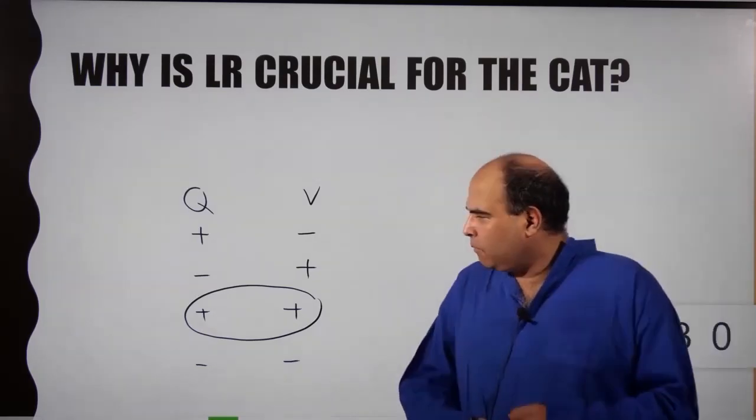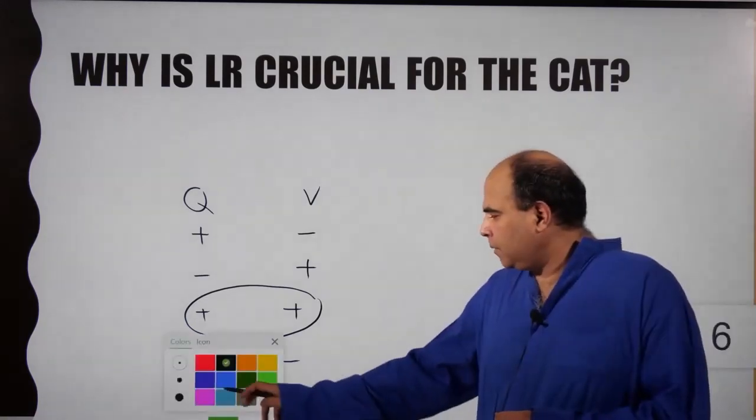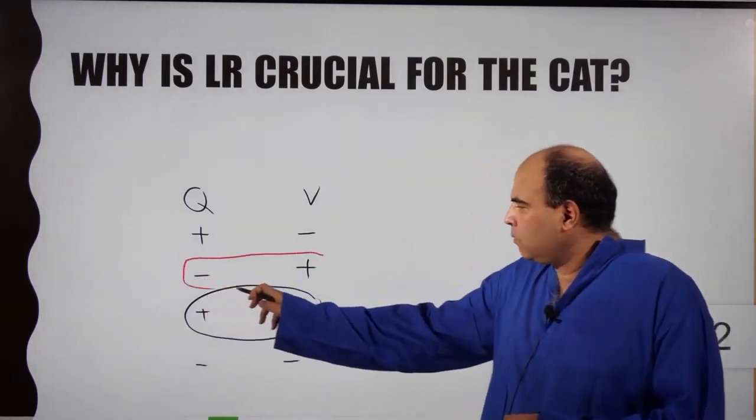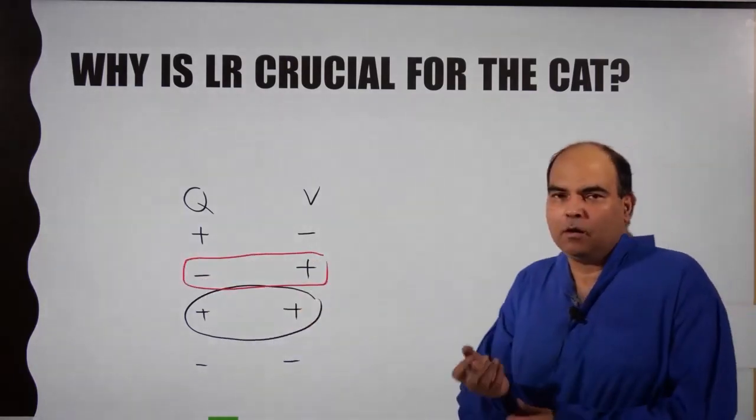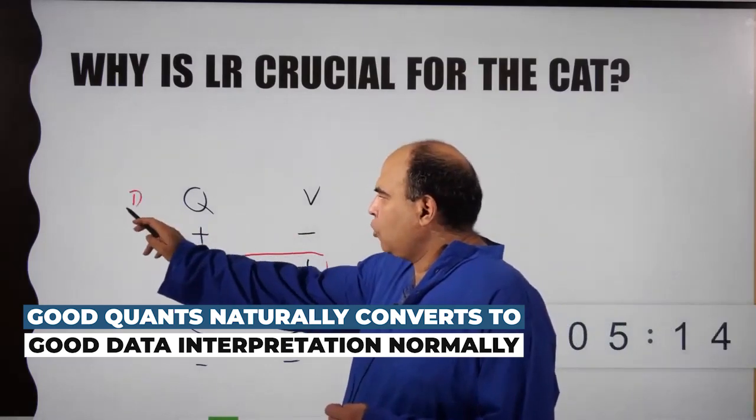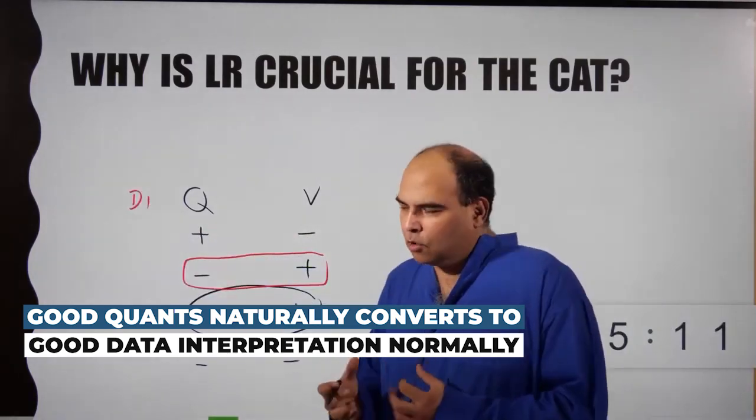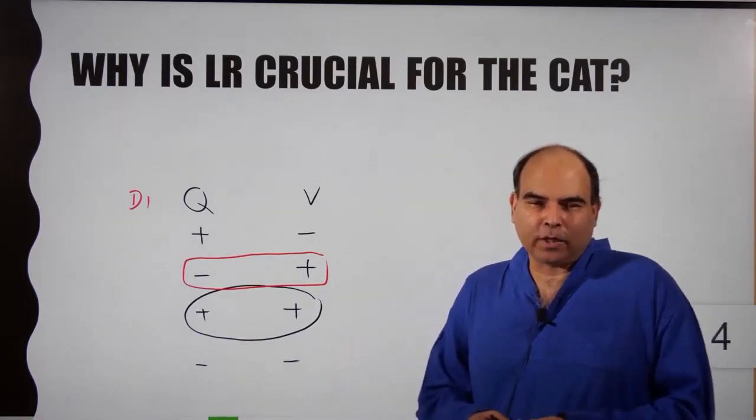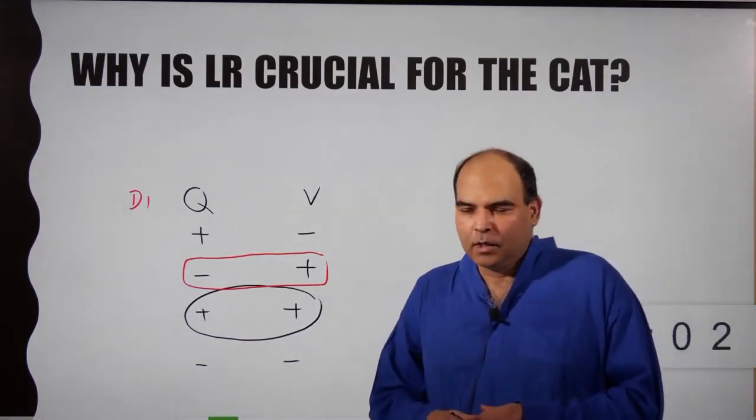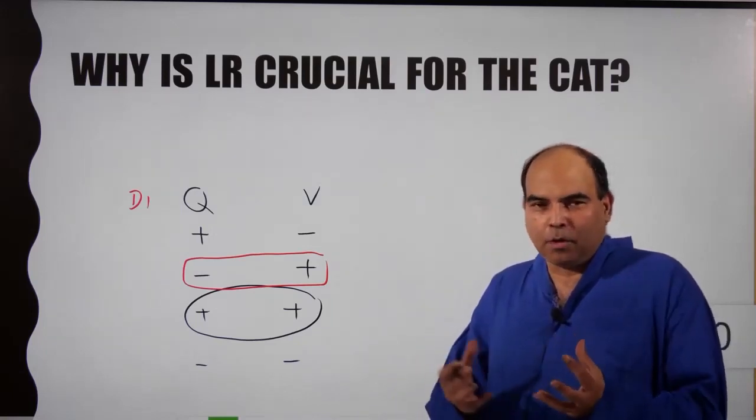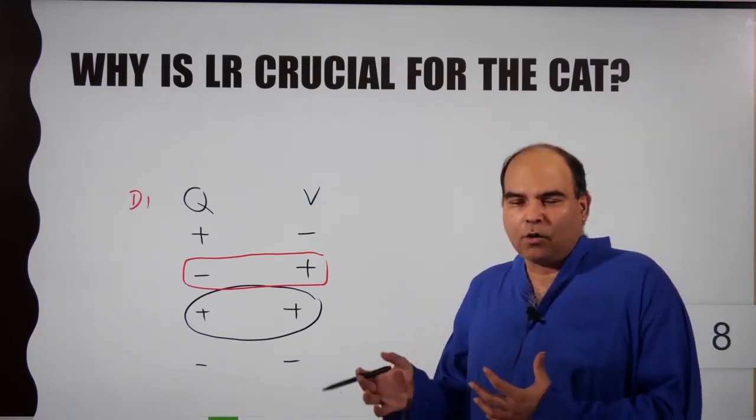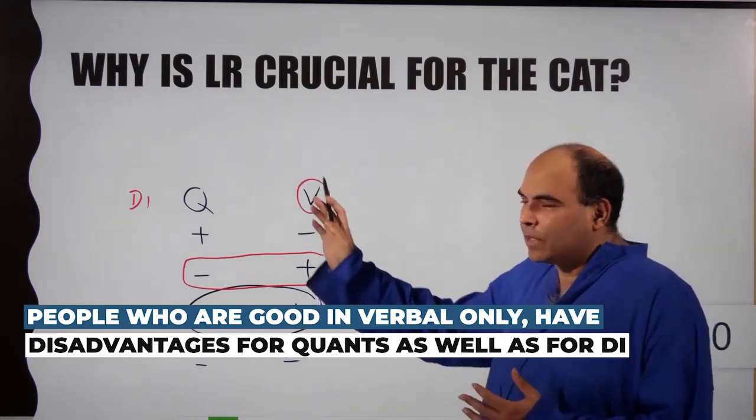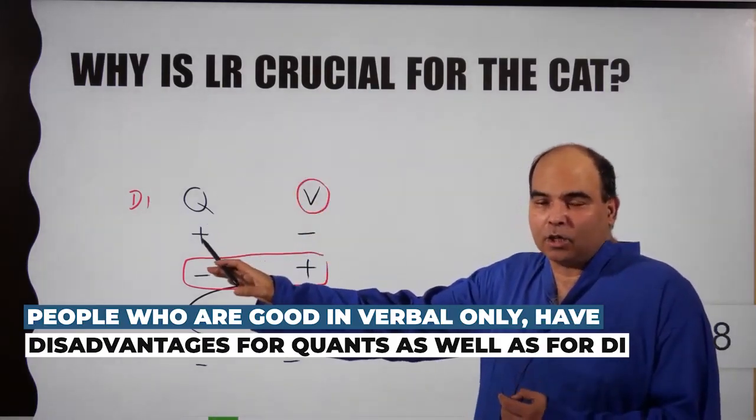Coming back, LR becomes important specifically for these people - people with slightly poor quants but decent at verbal. What happens? Good quants naturally converts normally to good DI. I have not seen good quants normally not going to good DI, because data interpretation is essentially an expanded form of math questions only. As you would realize, it's about variables, it's about numbers, etc. So if your quant skills are good, normally you'll be able to transfer it easily into DI.